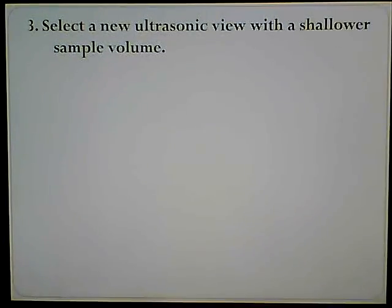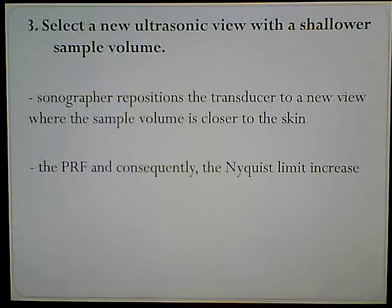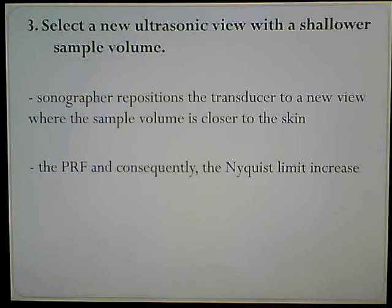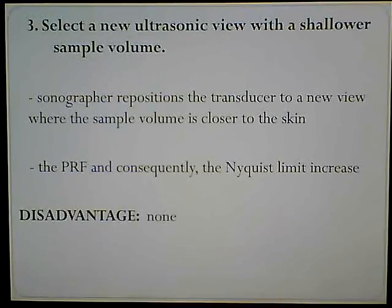Number three: select a new ultrasonic view with a shallower sample volume. The idea is to get the sample volume shallower or closer to the probe — if that means manipulation of the probe, then yes. The sonographer repositions the transducer to a new view where the sample volume is closer to the skin, which makes the PRF go up, increasing the speed limit and consequently the Nyquist limit, eliminating aliasing. There is no disadvantage.